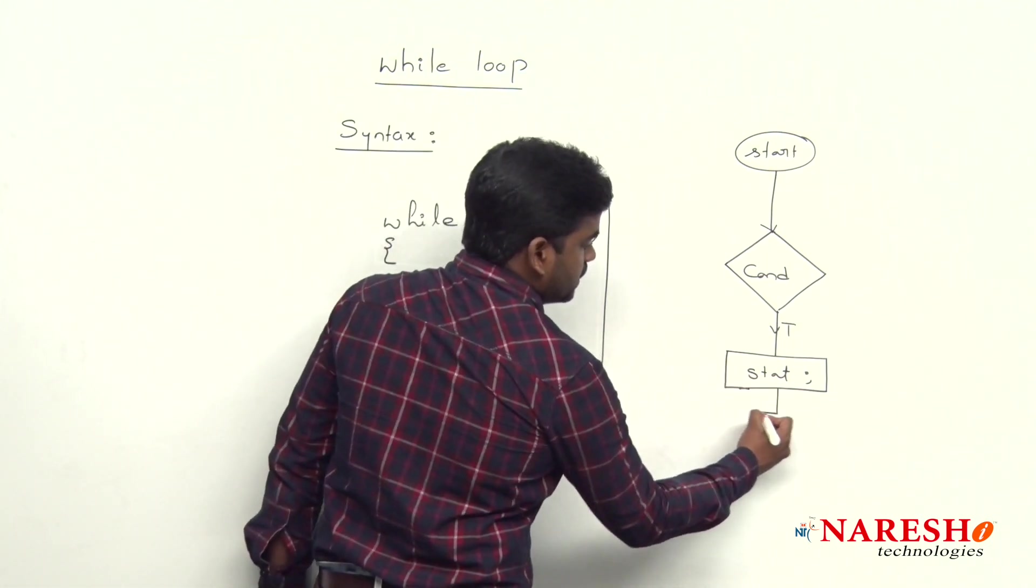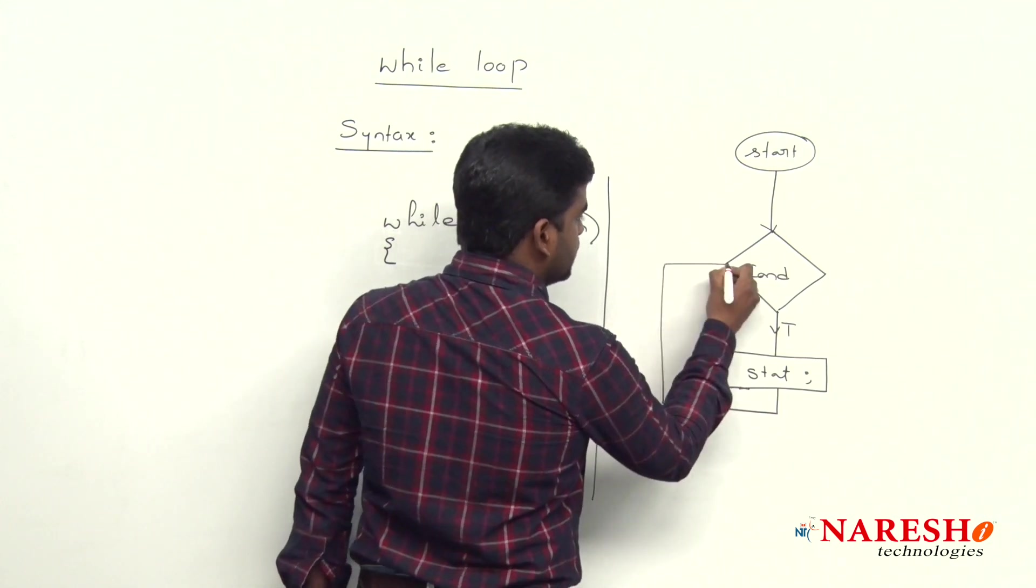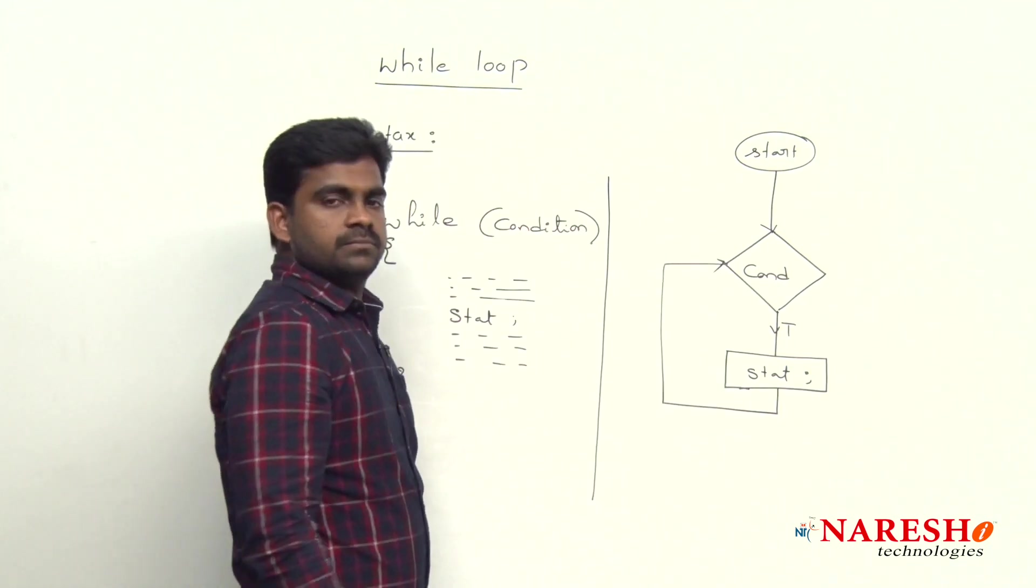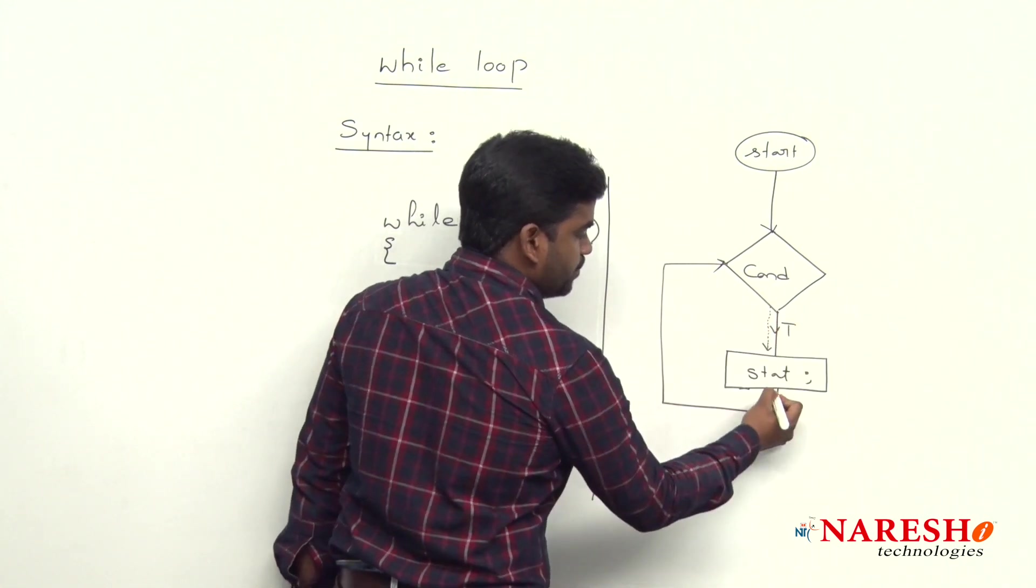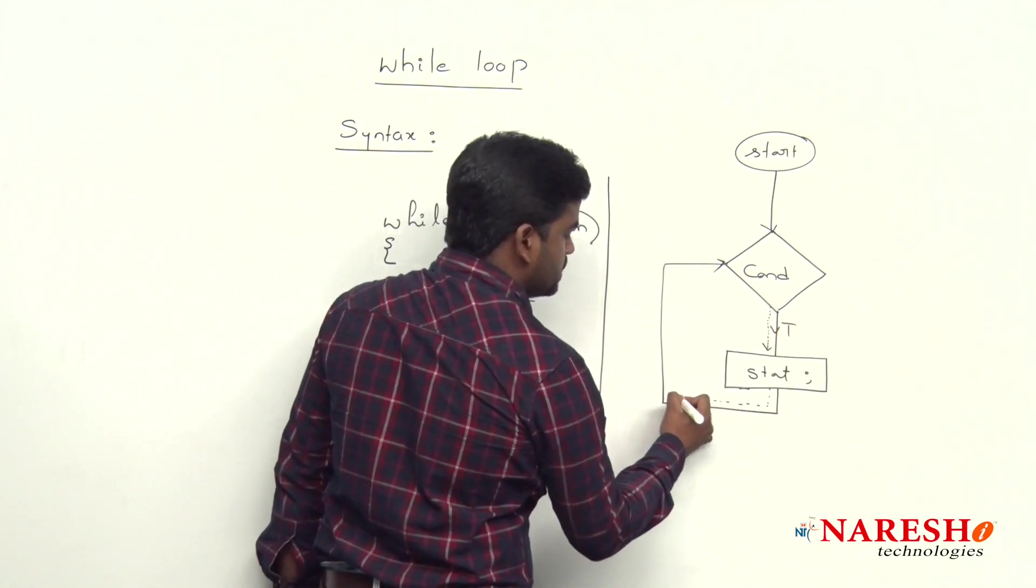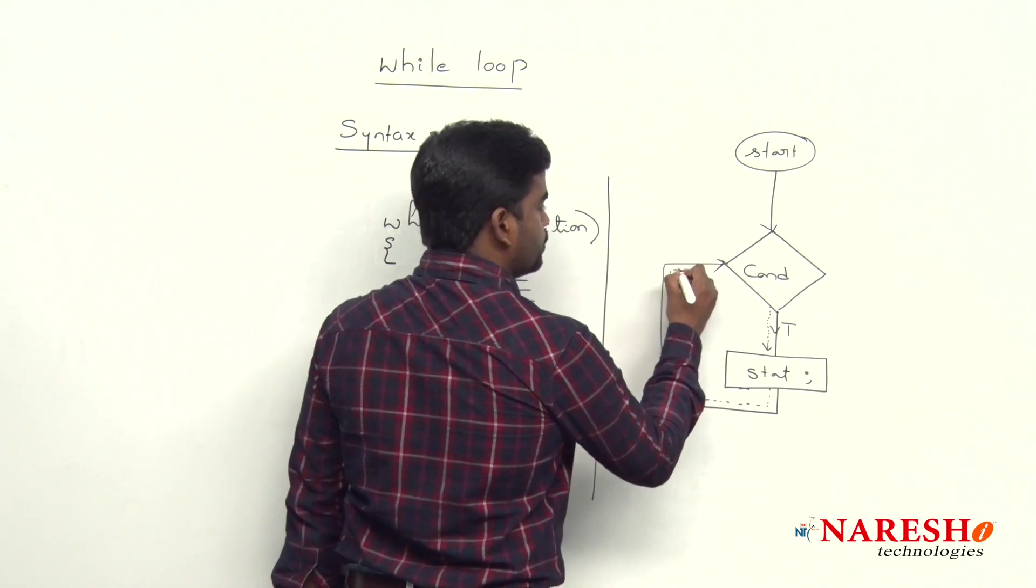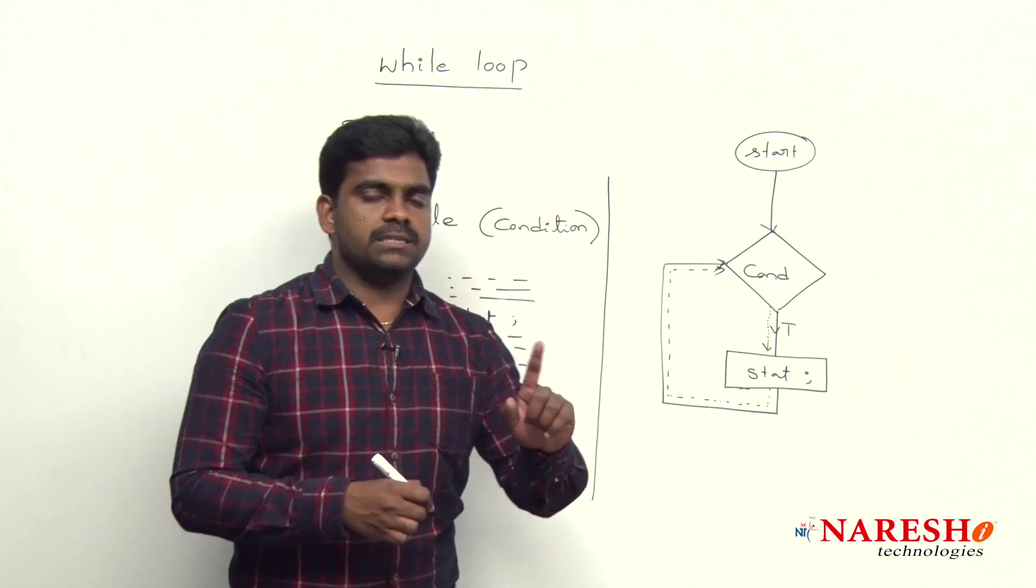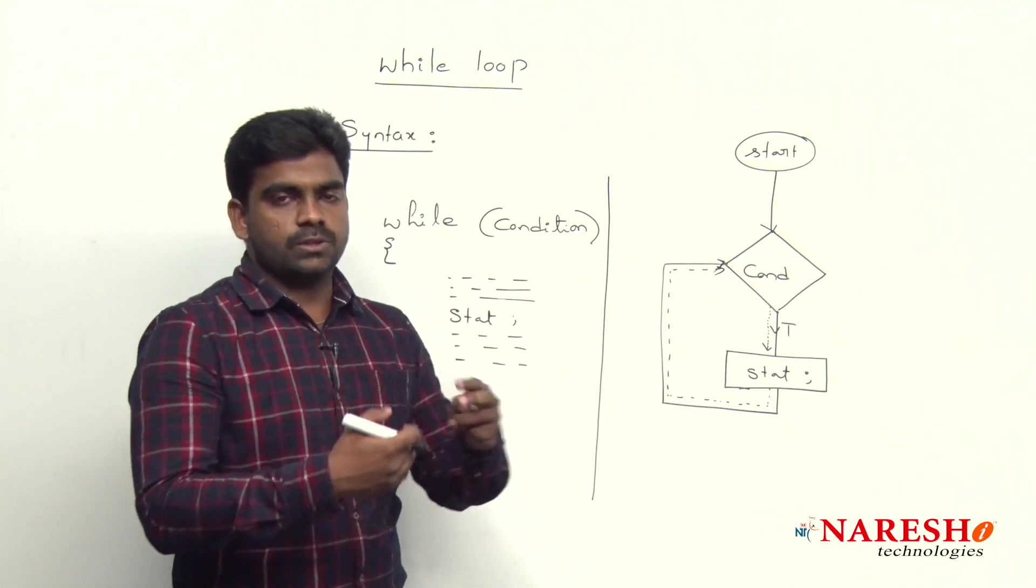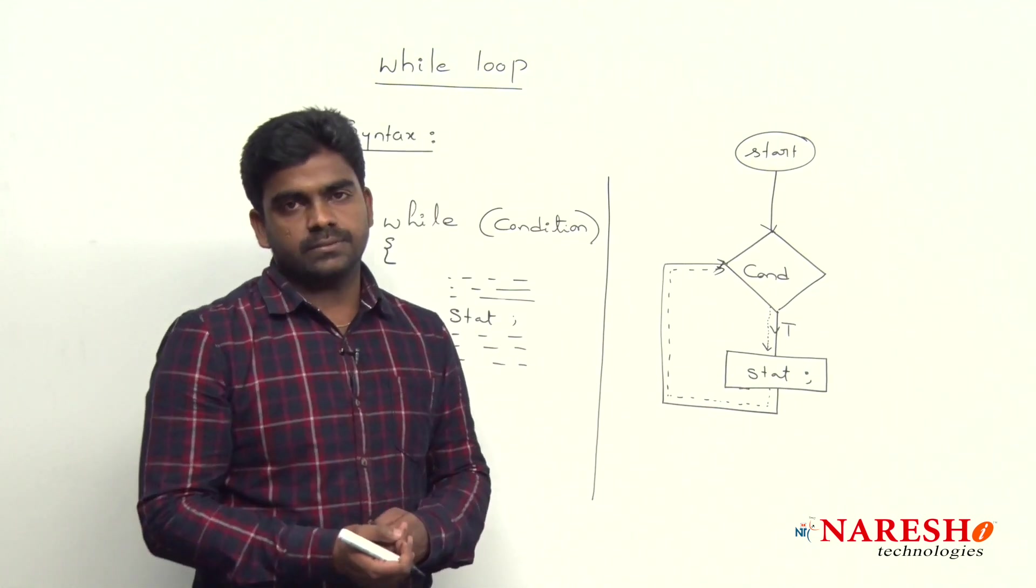After that, it will not terminate. Again it will go and check the condition. If the condition is true, again it will go inside and execute those statements and repeat. This process will continue as long as the specified condition is true. That is what we call a loop, iterations.